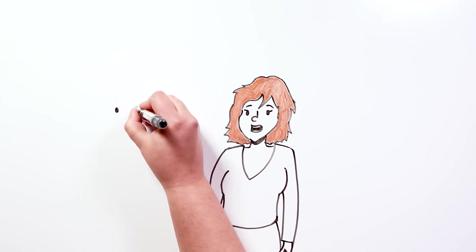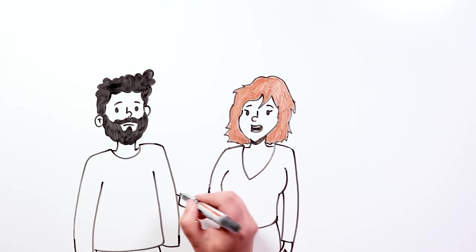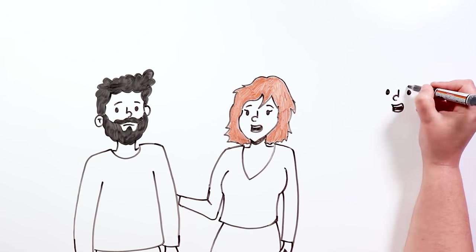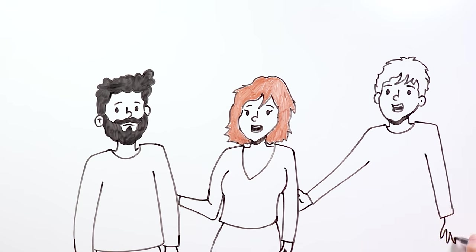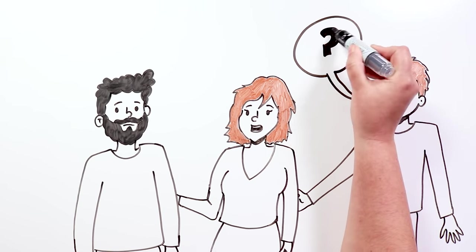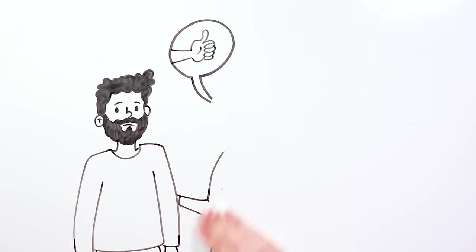She later told her husband that her daughter was having horrible nightmares. While they were talking, Johnny interrupted them to let them know that he was going to the store and that he could take Sally. The mother agreed, and Sally reluctantly got into his car.